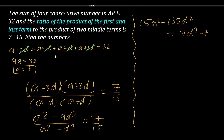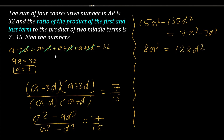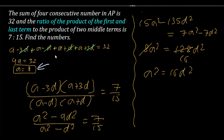Keeping like terms together: 15a² - 7a² = 8a², and -7d² + 135d² = 128d². So we get 8a² = 128d², which simplifies by dividing by 8 to give a² = 16d².